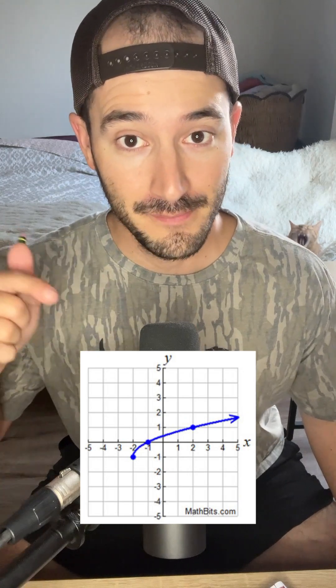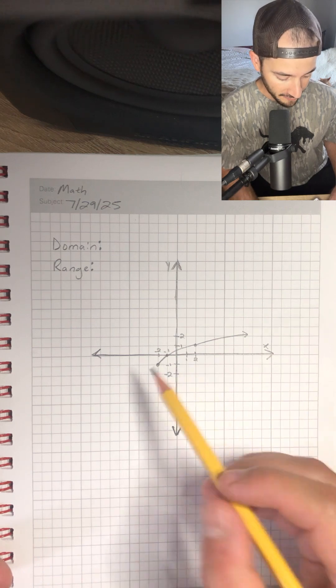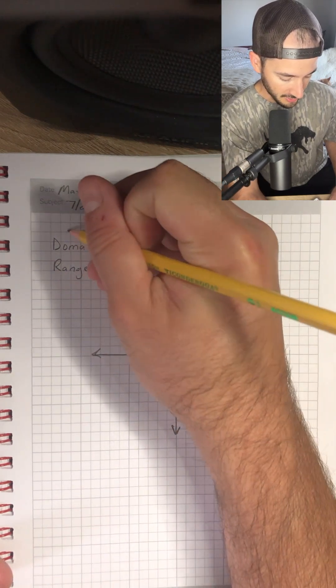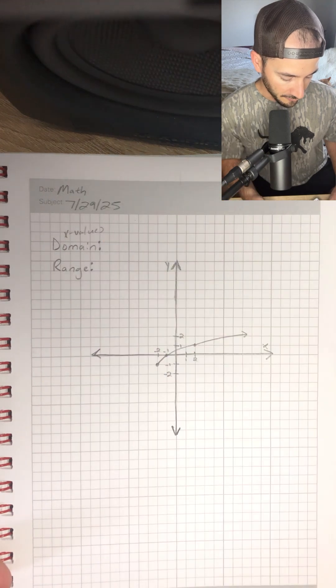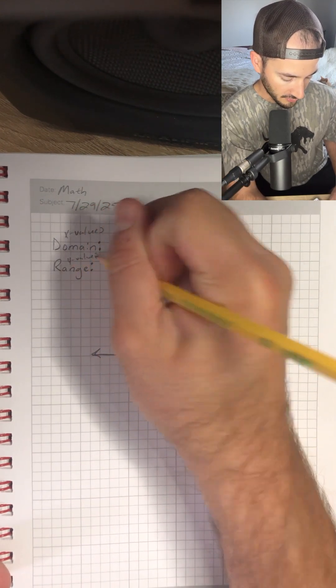Can you find the domain and range of this problem? We're given this graph and we want to find the domain and range of the graph. Let's remember that the domain is just all the possible x values of a function and the range is all the possible y values of a function.